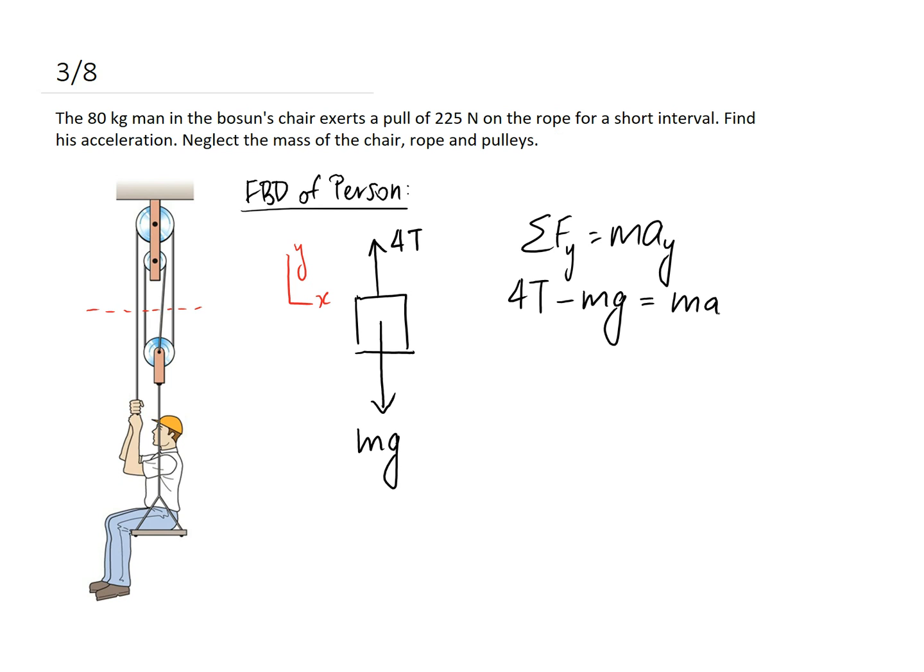We're trying to solve for that acceleration so we can rearrange and we get this. Now it's just a matter of substituting in. Four times the tension in the rope, and we're told that he's going to pull 225 newtons down, so that's the tension the whole way through. Four times 225 minus his mass, which is 80, times gravity, which is 9.8, and divide by his mass again. Solving this, it comes out to be approximately 1.45 meters per second squared. And because it came out to be positive, it's in the positive y direction, so it's straight up.